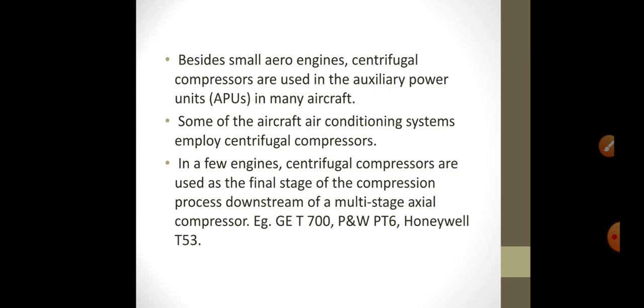Besides small aero engines, centrifugal compressors are used in auxiliary power units in many aircraft. Some aircraft air conditioning systems employ centrifugal compressors. In a few engines, centrifugal compressors are used as the final stage of the compression process downstream of multi-stage axial compressors, for example GE T700, P&W PT6, and Honeywell T53.